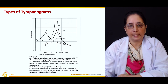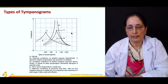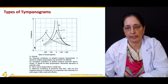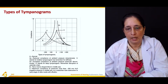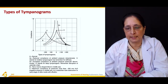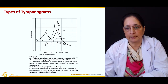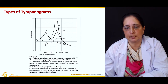The types of tympanogram are: Type A is the normal tympanogram, showing normal compliance of the tympanic membrane. Type AS (shallow) shows reduced compliance, indicating stiffness. Type AD (deep) shows increased compliance.